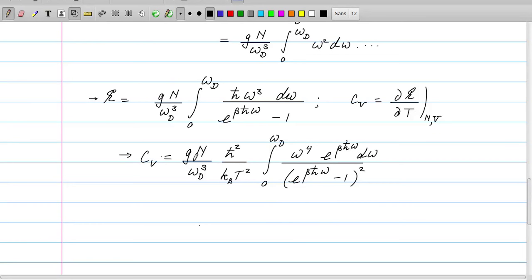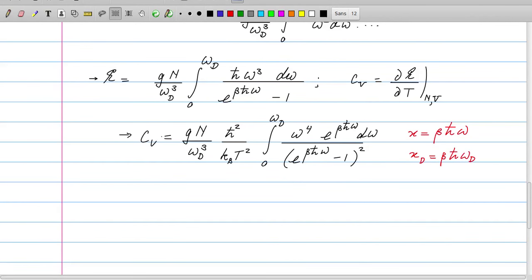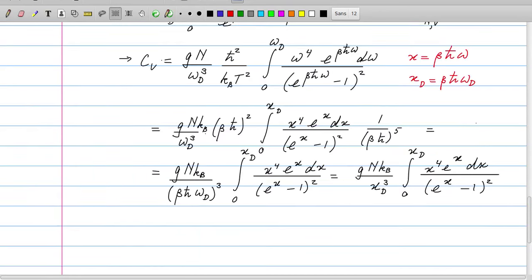So these are two new definitions that we are going to use in order to streamline this expression. Then we obtain the following: we have an integral now over dx which everywhere has an x instead of an omega.